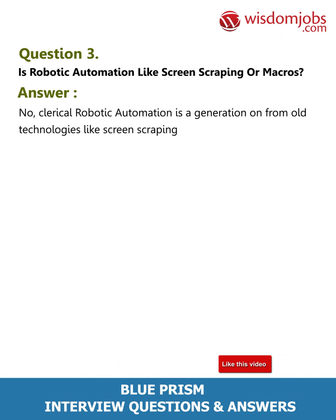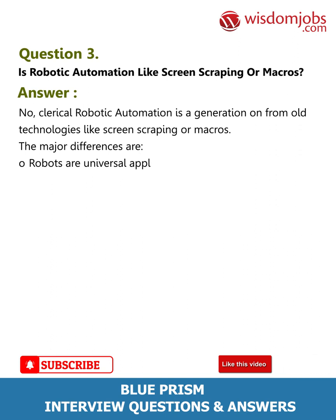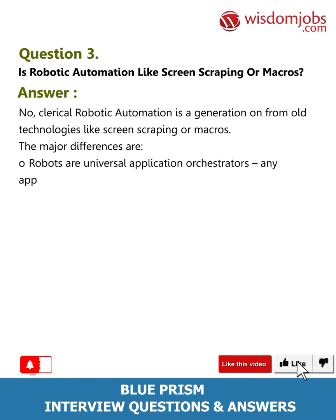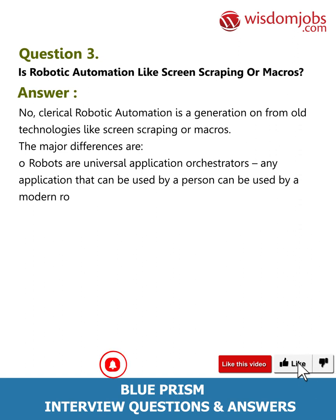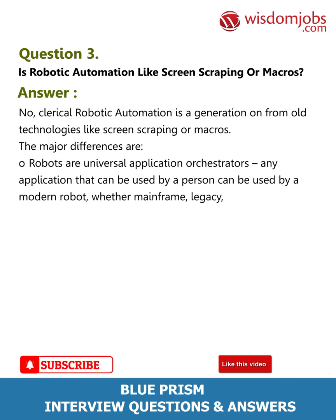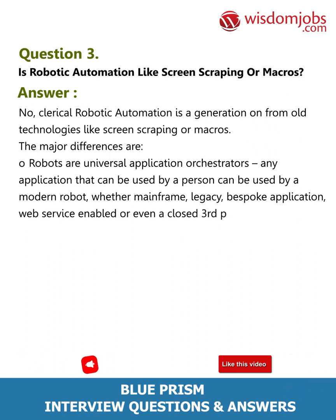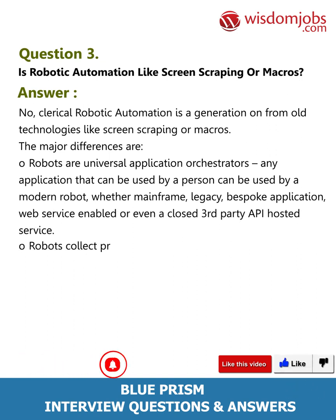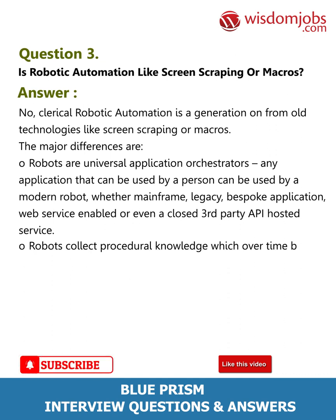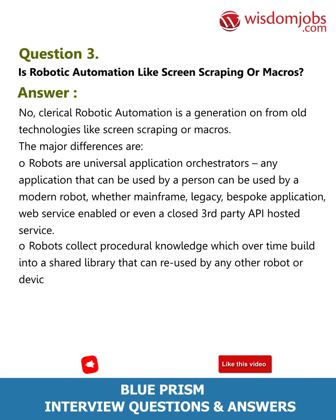The major differences are: RPA robots are universal application orchestrators — any application that can be used by a person can be used by a modern robot, whether mainframe, legacy, bespoke application, web service-enabled, or even a closed third-party API hosted service. Robots collect procedural knowledge which over time builds into a shared library that can be used by any other robot or device, in the same way objects are built in traditional software engineering.